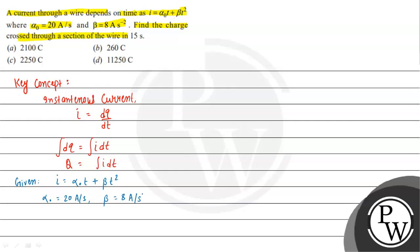We need to find the charge. Q = integration of I dt. So Q = integration of (α₀t + βt²) dt, with time from 0 to 15 seconds.